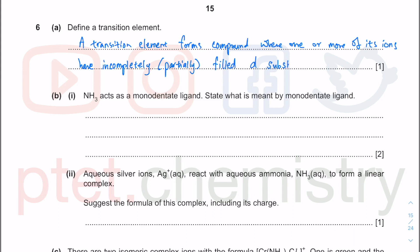The next question asks why NH₃ acts as a monodentate ligand. There are two parts to this definition. 'Mono' refers to one dative covalent bond per ligand. The ligand must form that dative covalent bond to the metal center, which could be a metal ion or atom.